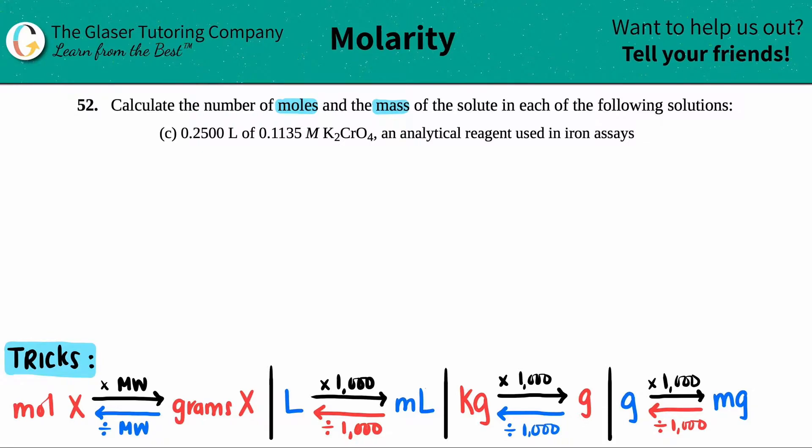In this case, they told us that we have 0.250 liters of a 0.1135 molarity of K2CrO4, potassium chromate, which is an analytical reagent used in iron assays.